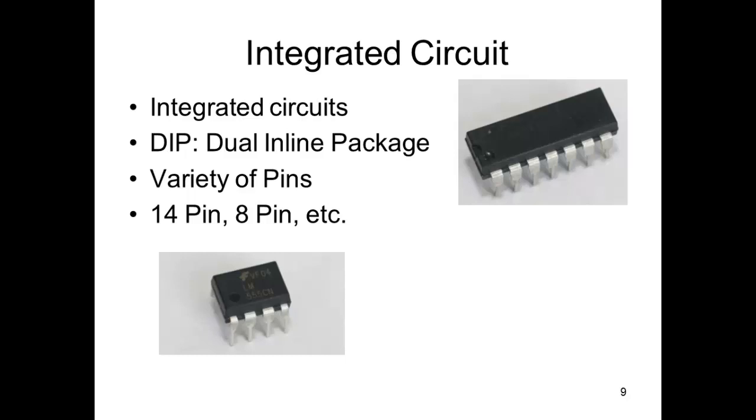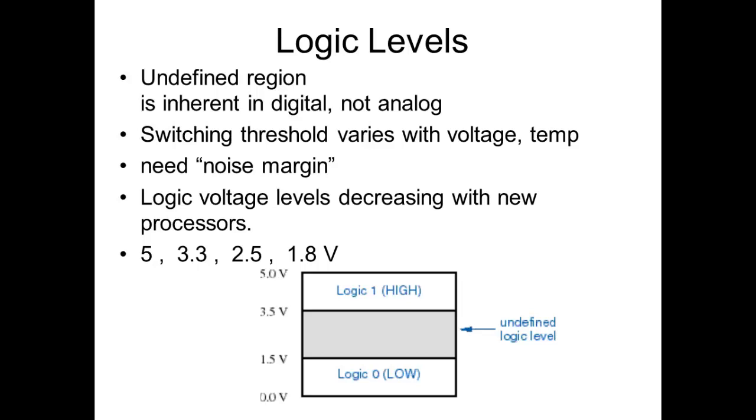These typically come in IC packages and you'll get lots of information about those from other places. ICs come in a variety of packages. We generally use in class the 7400 series. Logic levels between 3.5 volts and 1.5 volts don't work very well, so you really want to make sure you've got a good strong signal of greater than 3.5 for on and less than 1.5 for off.